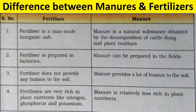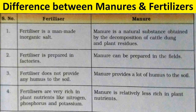The differences between manures and fertilizers: fertilizer is a man-made inorganic salt, whereas manure is a natural substance obtained by decomposition of cattle dung and plant residues. Fertilizer is prepared in factories, but manure can be prepared in the fields. Fertilizer does not provide humus to the soil, whereas manure provides a lot of humus. Fertilizers are very rich in plant nutrients like nitrogen, phosphorus and potassium, whereas manure is relatively less rich. Therefore, fertilizers must be used with caution, and farmers must use fertilizers and manure in the correct proportion.